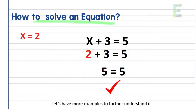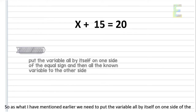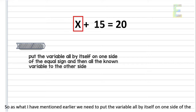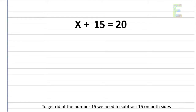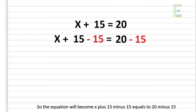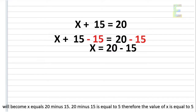Let's have more examples to further understand it. What if we have an equation x plus 15 equals 20? Find the value of x. We need to put the variable all by itself on one side, so to get rid of the number 15, we subtract 15 on both sides. The equation becomes x plus 15 minus 15 equals 20 minus 15. Positive 15 minus 15 cancels out, so x equals 20 minus 15. Therefore, the value of x is equal to 5.